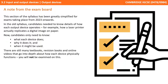Just before we go ahead, a little note from the exam board. This section of the syllabus has been greatly simplified for exams taking place from 2023 onwards. In the old syllabus, candidates needed to know details of how each output device actually operated — for example, how a laser printer actually replicates a digital image on paper. Now candidates only need to know what each device does, why it does it and when it might be used. There are still many textbooks, revision books and online videos that go into depth about how each device physically functions, but you're no longer going to be examined on this content.